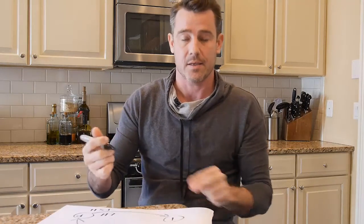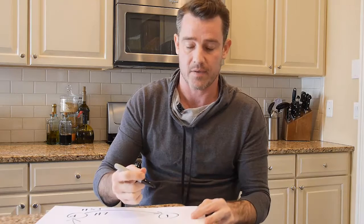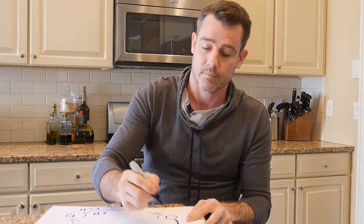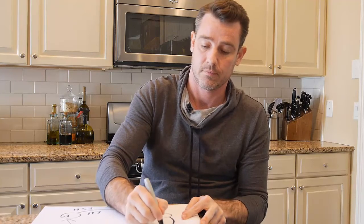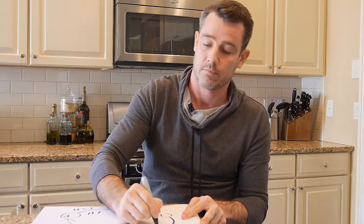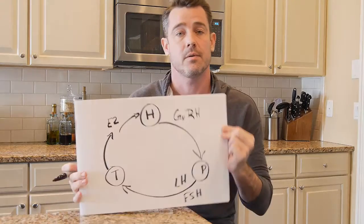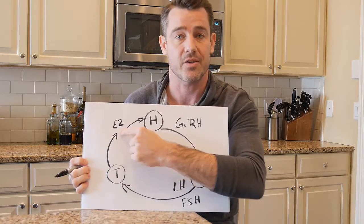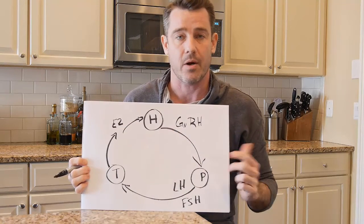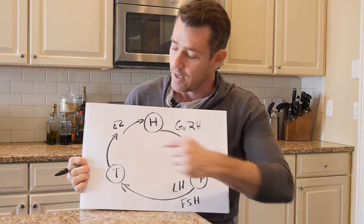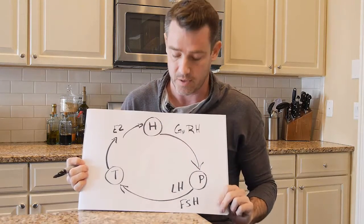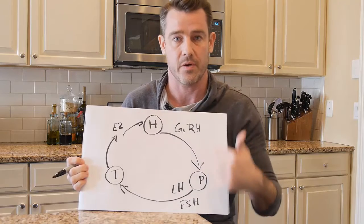When LH and FSH are at healthy levels, the testicles produce a healthy amount of testosterone. The body naturally aromatizes some of this testosterone into estradiol, which is the primary estrogen in a man, and that is what the hypothalamus is looking for. You can see there are multiple points of failure here.